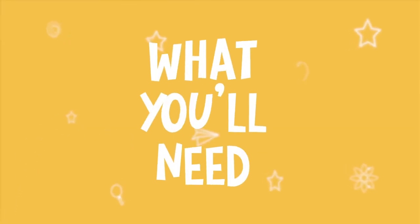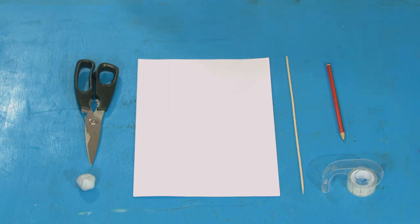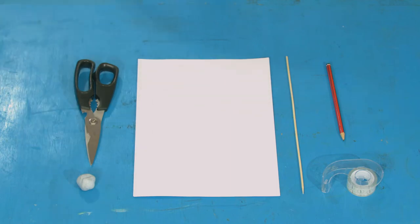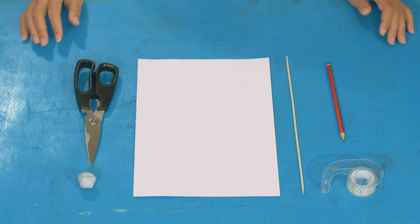For this experiment you will need tape, scissors, three sheets of paper, a pencil, a long straight stick like a skewer or a wooden spoon handle and a big lump of blu-tack or plasticine to add weight to our pendulum.